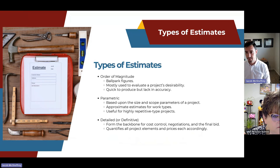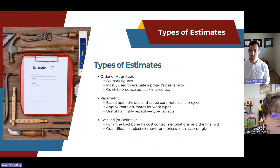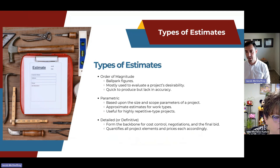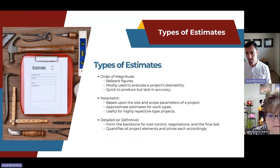A parametric estimate is based on the size and scope parameters of a project — more of a statistics-based estimate. It approximates costs for the different work types involved in a project and is really useful for highly repetitive project types where you know the cost and time intensity for each item in the work type.